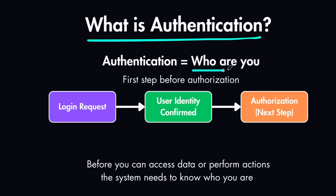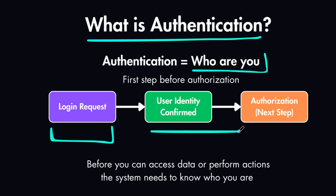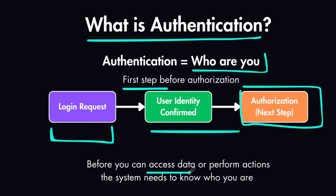Authentication basically answers who the user is and if they are allowed to access your system. Whenever a login request is sent, either by the user or another service, this is where we confirm the identity of the user and either approve their request or reject it with an unauthorized response. This is the first step before authorization begins, which is the topic of the next lesson. Before you access any data or perform any actions on a service, the system needs to know who you are.